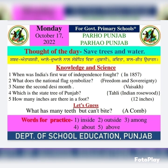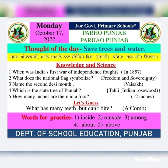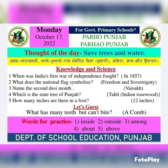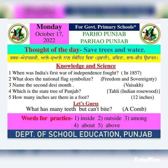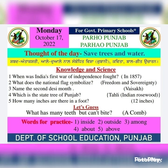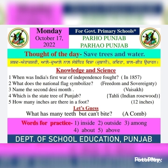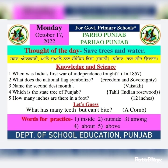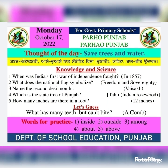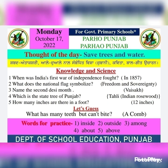Third question: name the second desi month. Doosre desi mahinne da na ki hai? The second desi month is Vaisakh. Fourth question: which is the state tree of Punjab? Punjab da raj rukh keda hai? The state tree of Punjab is Indian rosewood. Punjab da raj rukh tali hai.